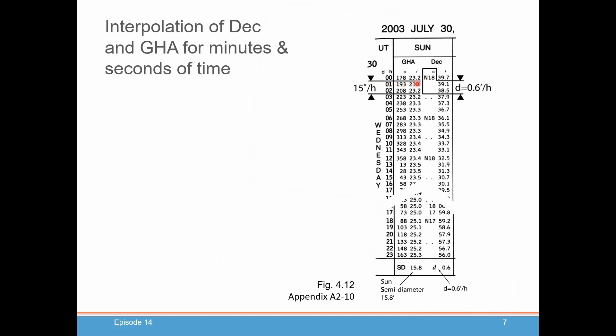You're going to pull the GHA out. You're going to pull out the declination, and you're going to note one further little piece of information. This number down here, 0.6 D. I'm going to show you how that helps us interpolate for declination.